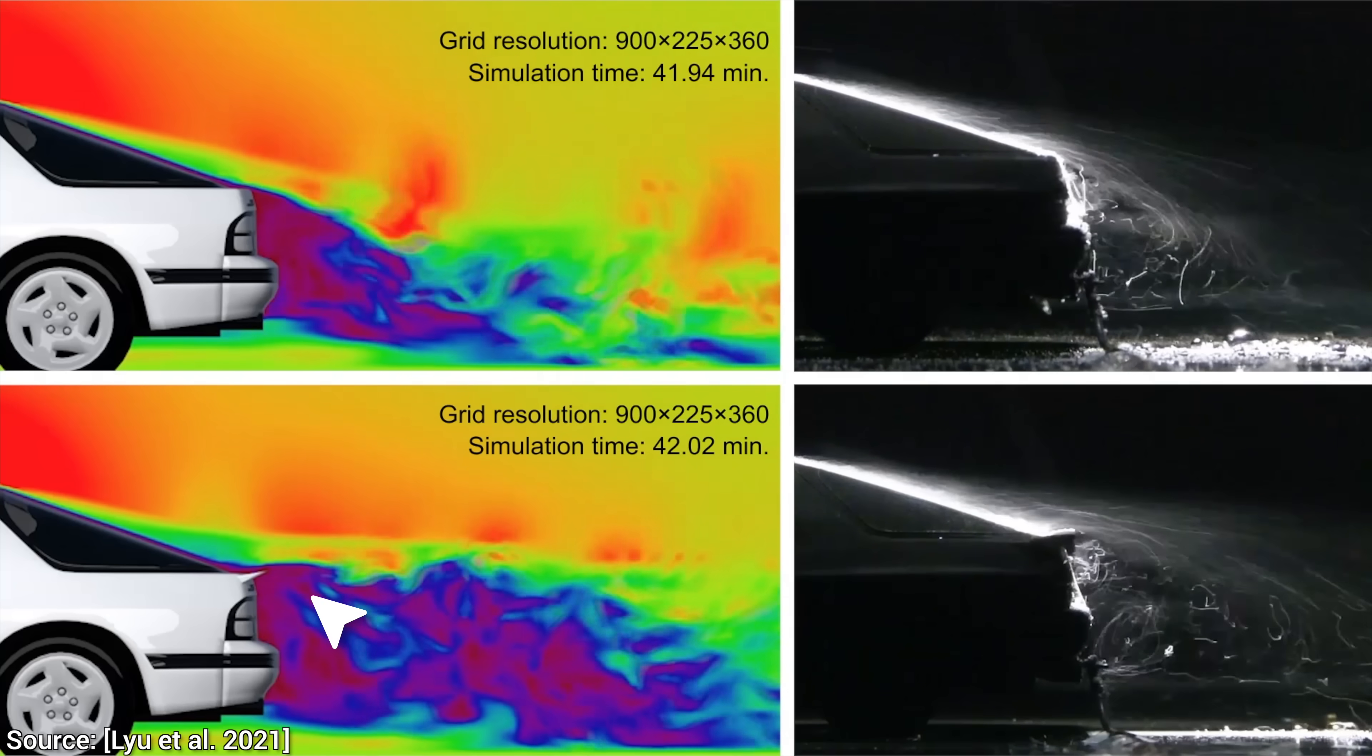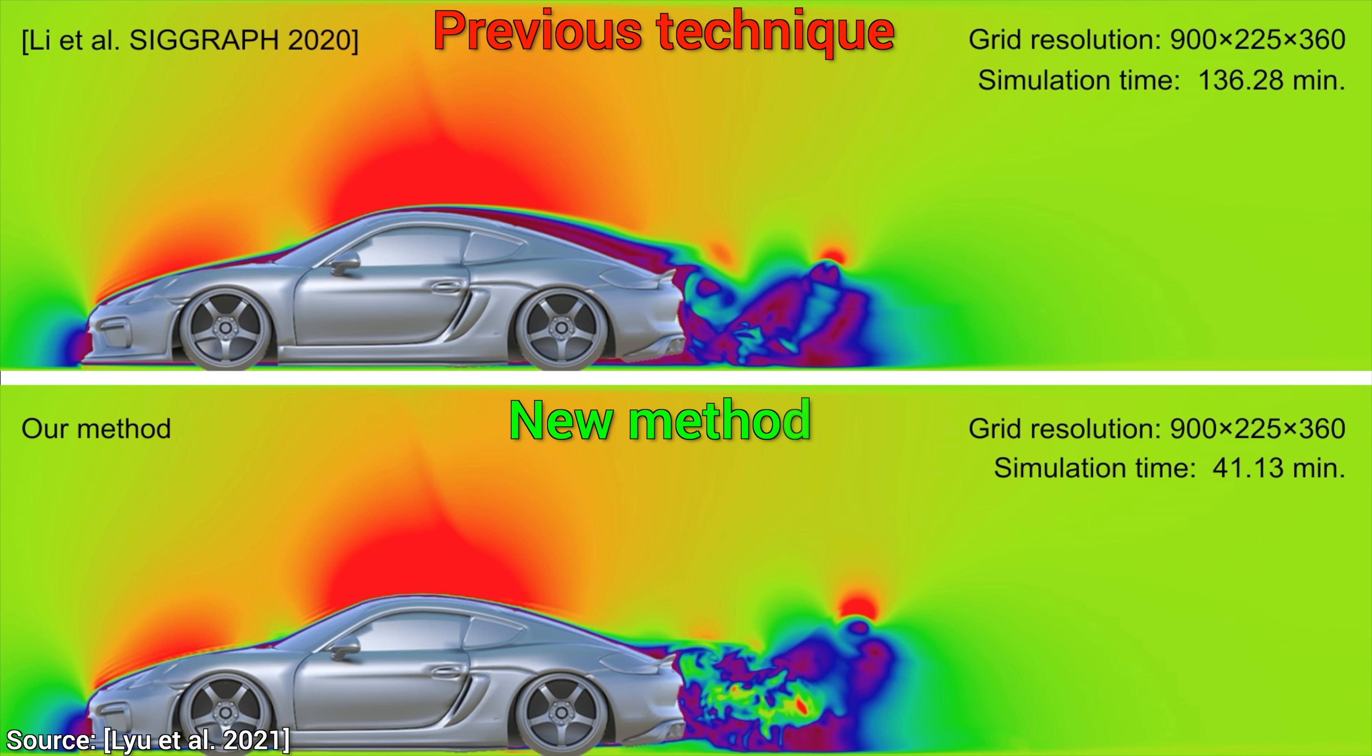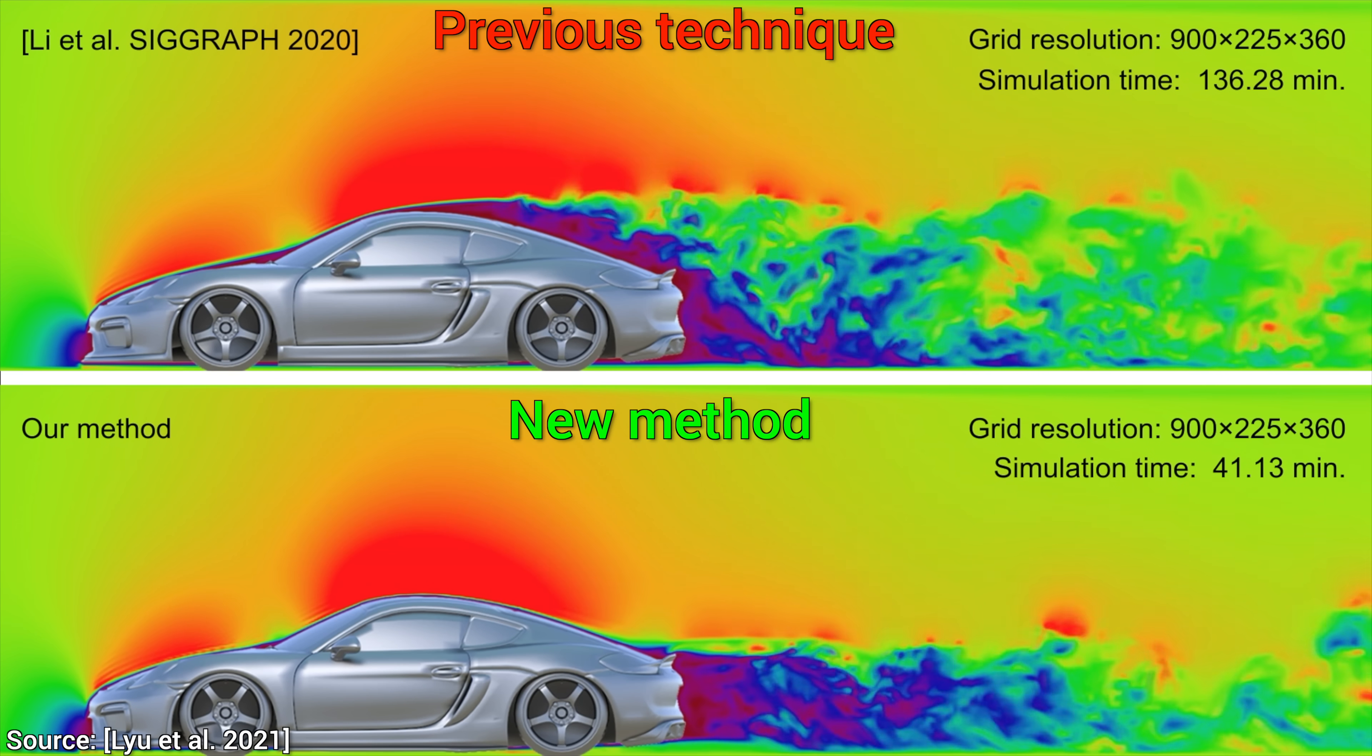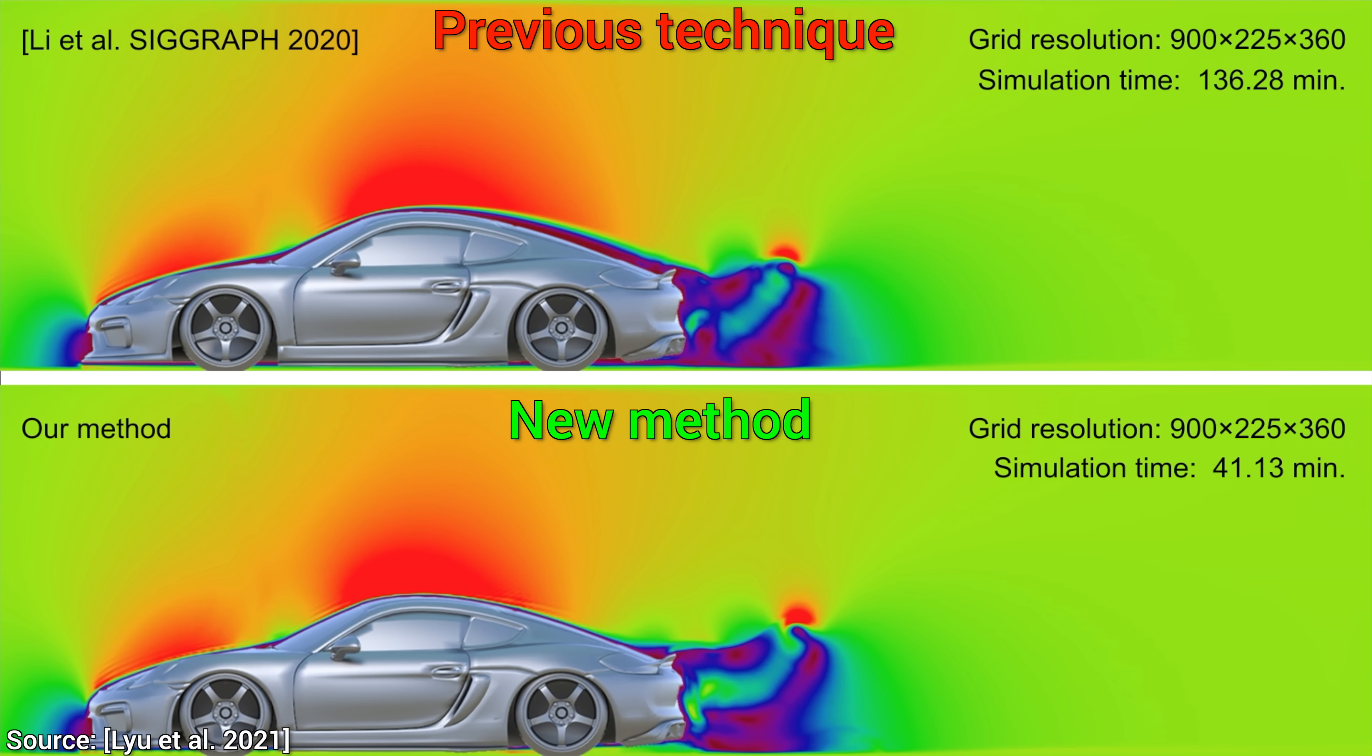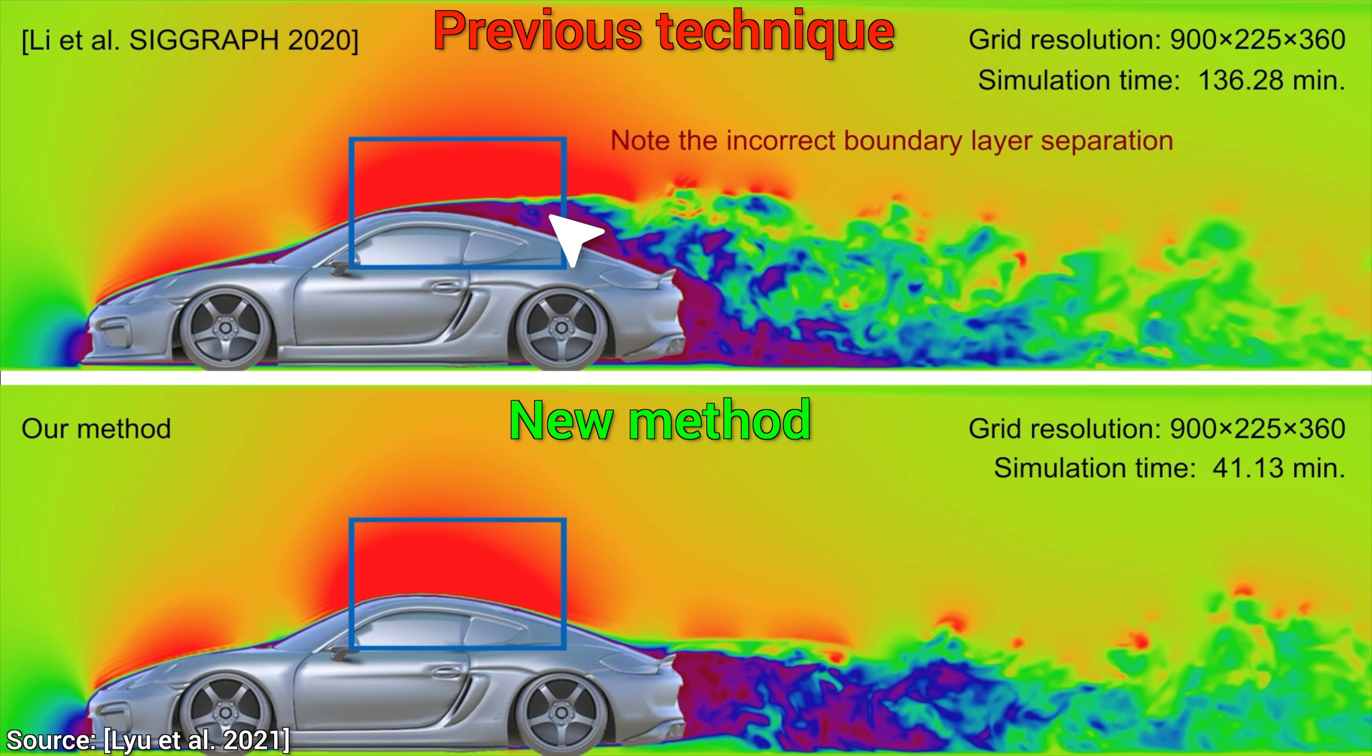So, we compared the simulation against reality. Now, let's compare a simulation against another simulation. So, against a previous method. Yes, the new one is significantly more accurate than its predecessor. Why? Because the previous one introduces significant boundary layer separations at the top of the car. The new one says that this is what will happen in reality.